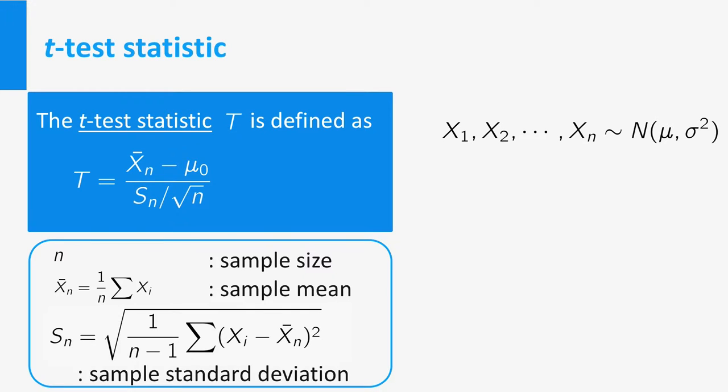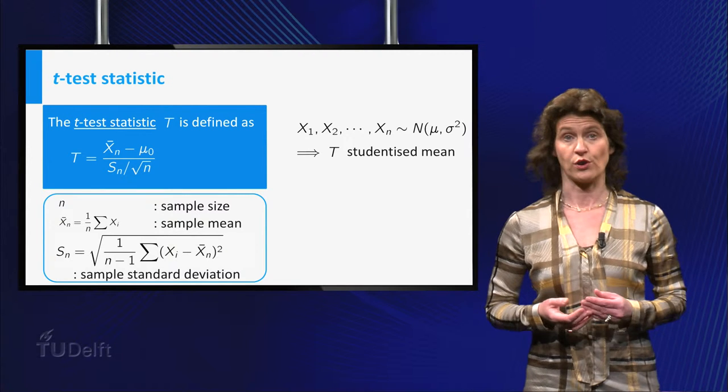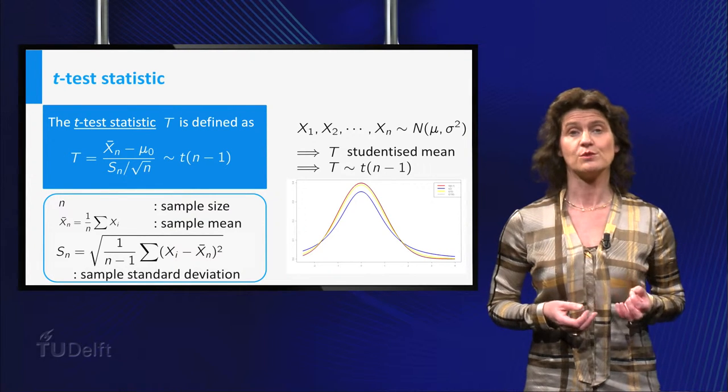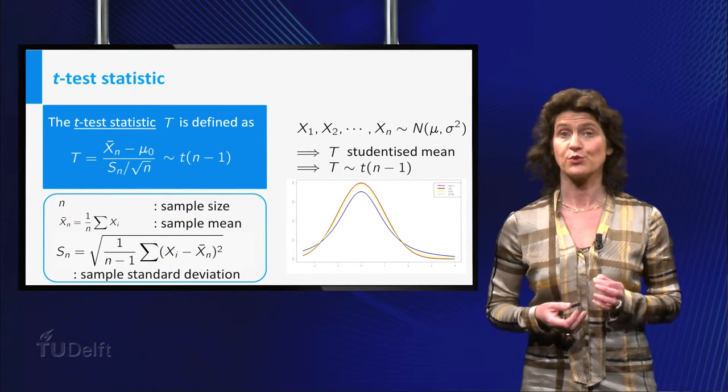Now remember the data were supposed to be representations of normally distributed random variables. This implies that t is in fact a studentized mean introduced to you before. So you know it has a t-distribution with n minus 1 degrees of freedom.